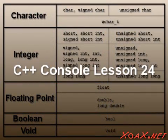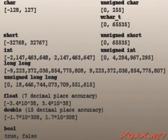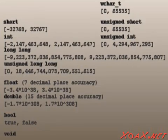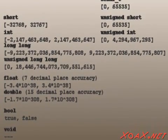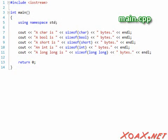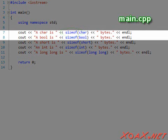Integer types come in a variety of different ranges. You can look at our C++ console lesson 24 for a list of the fundamental data types and the range of values they can take on. In our next program, we use the sizeof operator to display the sizes of some integer types, including the bool and char types because they can be used in much the same way as integers.